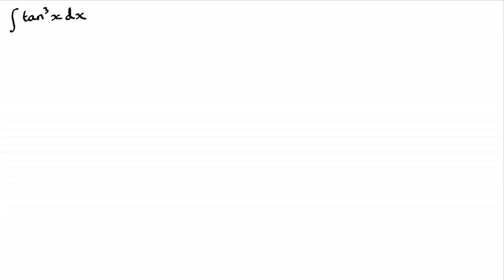So in order to do this, what we need to do is split this. It's a special one. Split it like this where we have tan x times tan squared x integrated with respect to x.